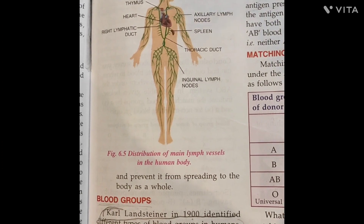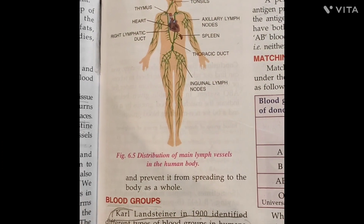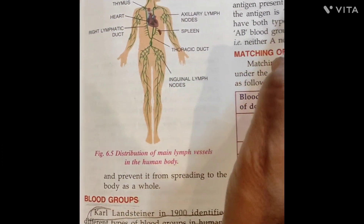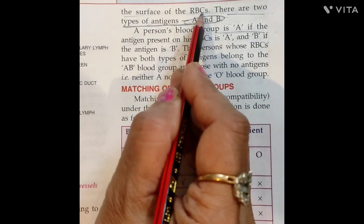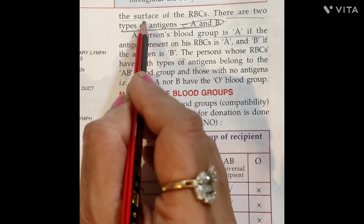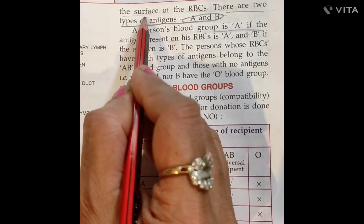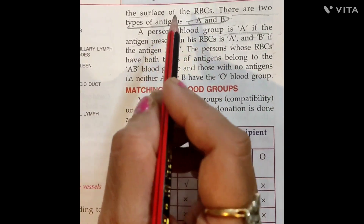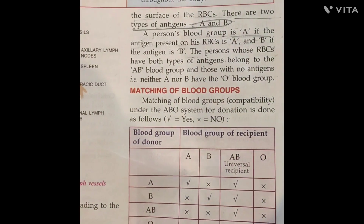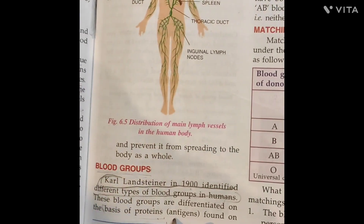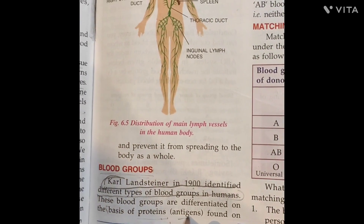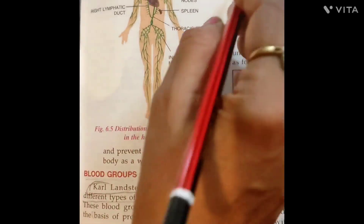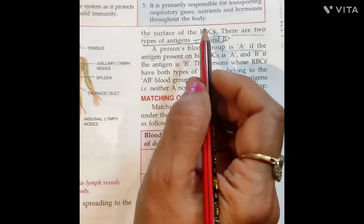The protein is located on the RBC surface — red blood cells' surface. This particular protein is called an antigen, which is the basis for blood group classification.